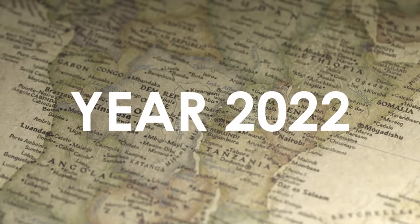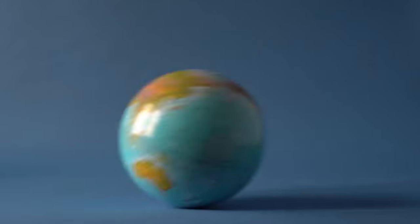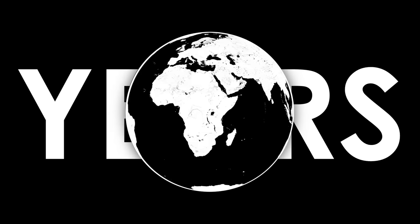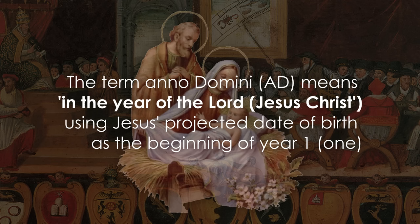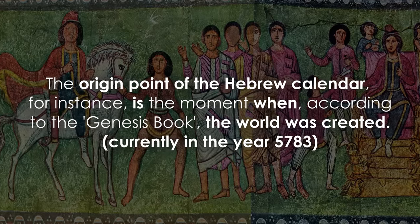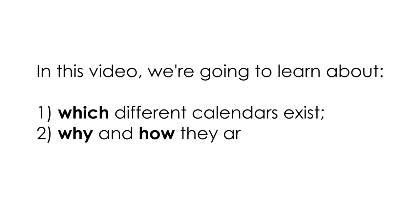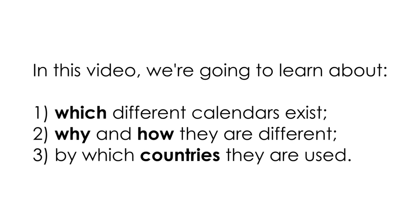But these months and their names are only valid for the Julian and then the Gregorian calendars. Other calendars throughout the world use a different amount of months as well as different names for each. For instance, the upload date year of this video is also 2022, but for some people it might be the year 2015. These people aren't in some other dimension where time moves slower, neither did they travel back in time — these differences are simply due to the fact that time is organized differently depending on where you are in the world, which is why the day, month, or even the year might vary. In this video, we're going to quickly learn about which different calendars exist, why and how they are different, and by which countries and in which ways they are used.